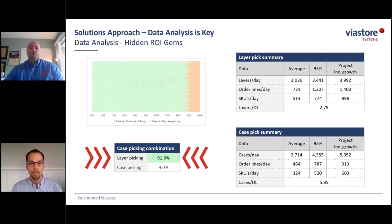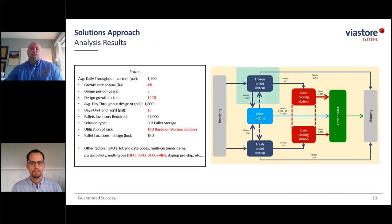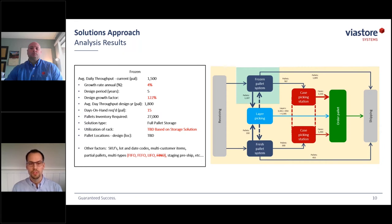This hybrid approach is an example of finding the optimal level of automation, focusing on automating portions of the operation that provided the highest ROI. Once we have completed the data analysis, we finalize the design criteria for the system and start to formulate a material flow based on the functional requirements, not tied to any particular technology. We then review our findings and projected design criteria with the customer to ensure our targets align with their goals.